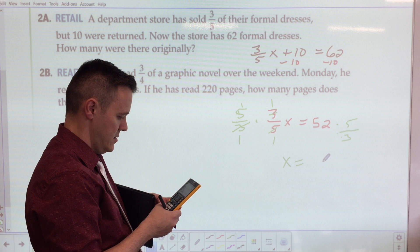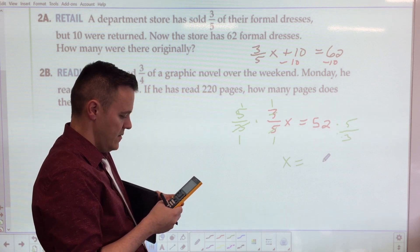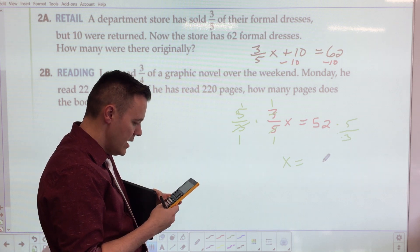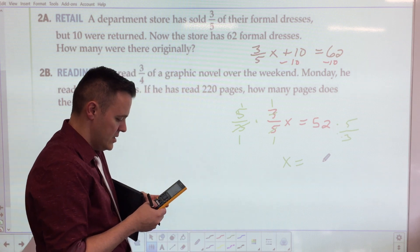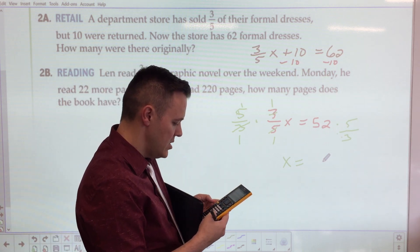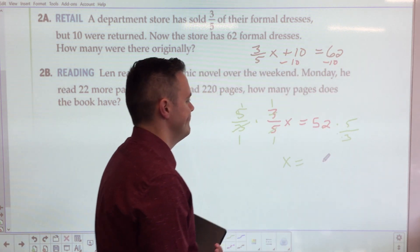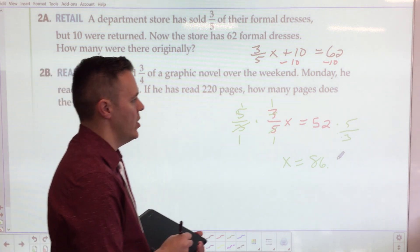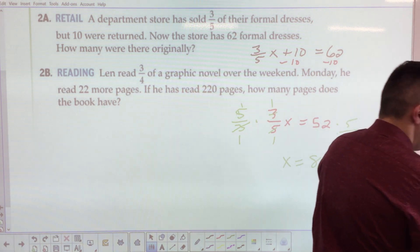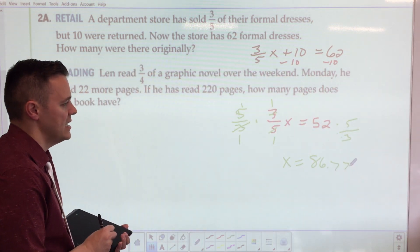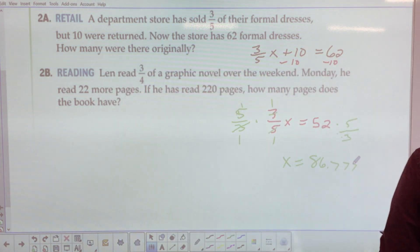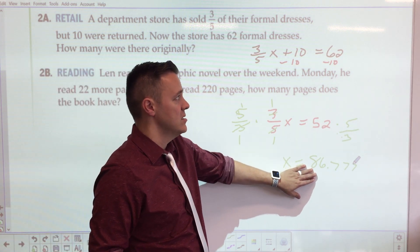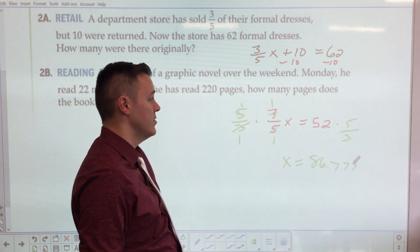Your turn — try the next real-world problem. A department store sold three-quarters of its formal dresses, but 10 were returned. Now the store has 62 dresses. How many were there originally? Write it as you read it: three-quarters x plus 10 equals 62.